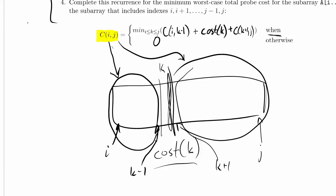So I want my base case to return zero cost, and that happens when the array is empty. When i is equal to j, I actually have an array with one entry. So by convention, when i is less than or equal to j I apply the recursive case, and when i is greater than j — meaning the subarray is empty — the cost is zero. This effectively gives us our complete recursive solution.